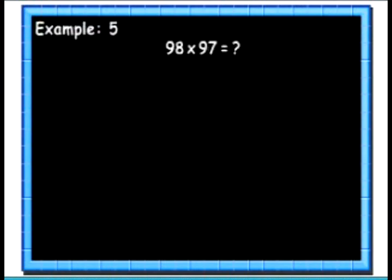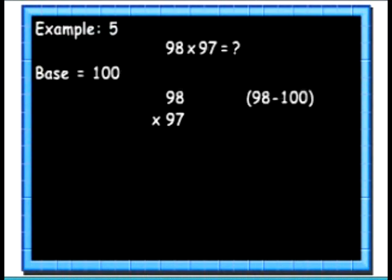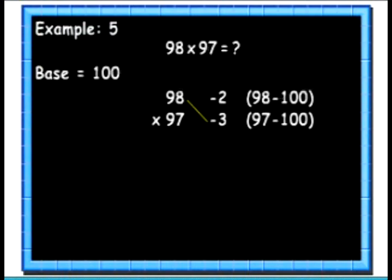Now we will learn multiplication of numbers which are close to 100. Here we want to multiply 98 and 97. We will take the base as 100. Then we will find the difference of the base from the numbers: 98 minus 100 is minus 2, and 97 minus 100 is minus 3. Then we will do the cross addition. Since the differences are negative we will subtract them from the numbers — from 98 we subtract the second number's difference to get 95, or from 97 we subtract the first number's difference, also getting 95. We will write this 95 below.